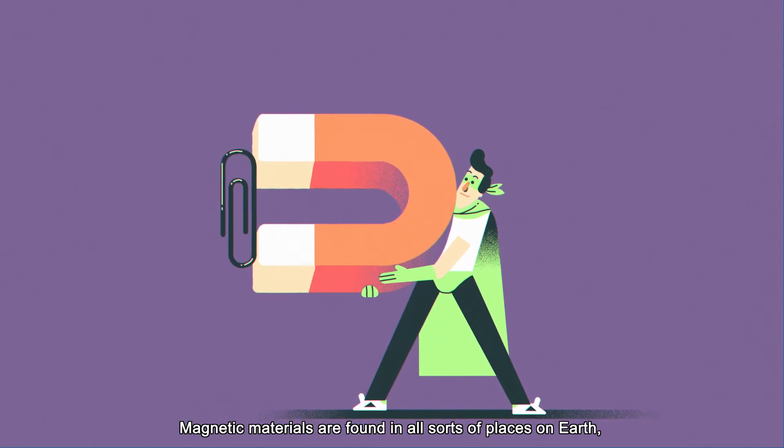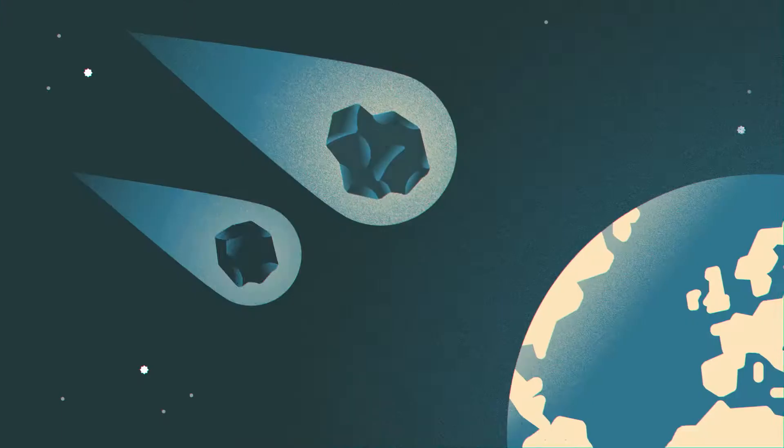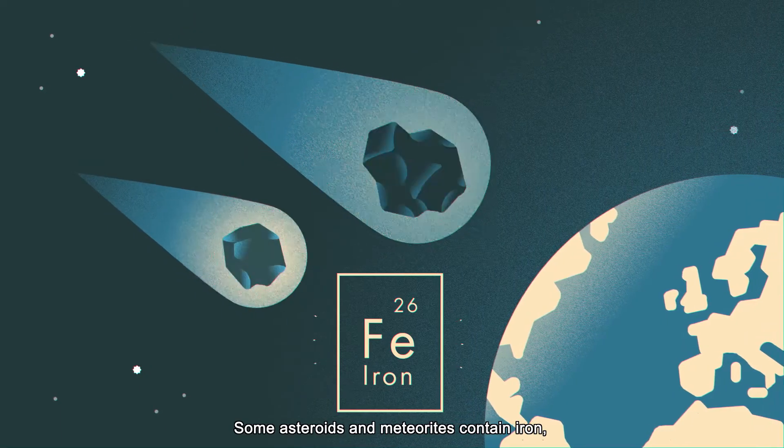Magnetic materials are found in all sorts of places on Earth, and even in space. Some asteroids and meteorites contain iron and can be magnetic.